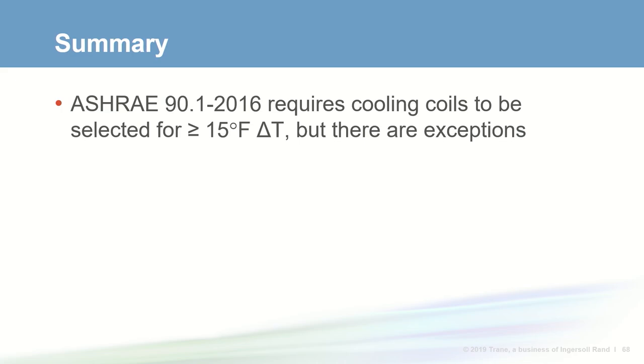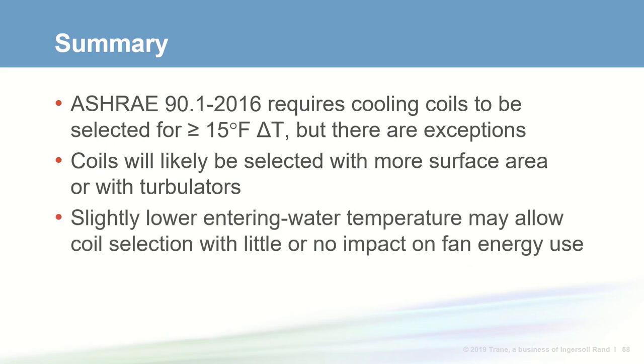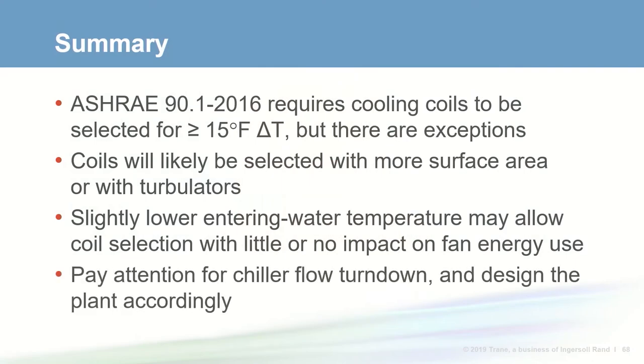In summary: ASHRAE 90.1 now requires cooling coils to be selected for a minimum 15 degree delta T, with some exceptions. The larger delta T reduces water flow rate, allowing smaller valves, pipes, and pumps, and reduces pump energy use. This will likely lead designers to select coils with more surface area or with turbulators. Turbulators allow coils to maintain or even increase delta T at part load, leading to pump energy savings. Designing with a slightly lower chilled water temperature may allow coils to be selected with little or no impact on fan energy use. And when selecting chillers for higher delta Ts, pay close attention to flow turndown — if turndown is poor, consider the impact on your pumping system and design accordingly.